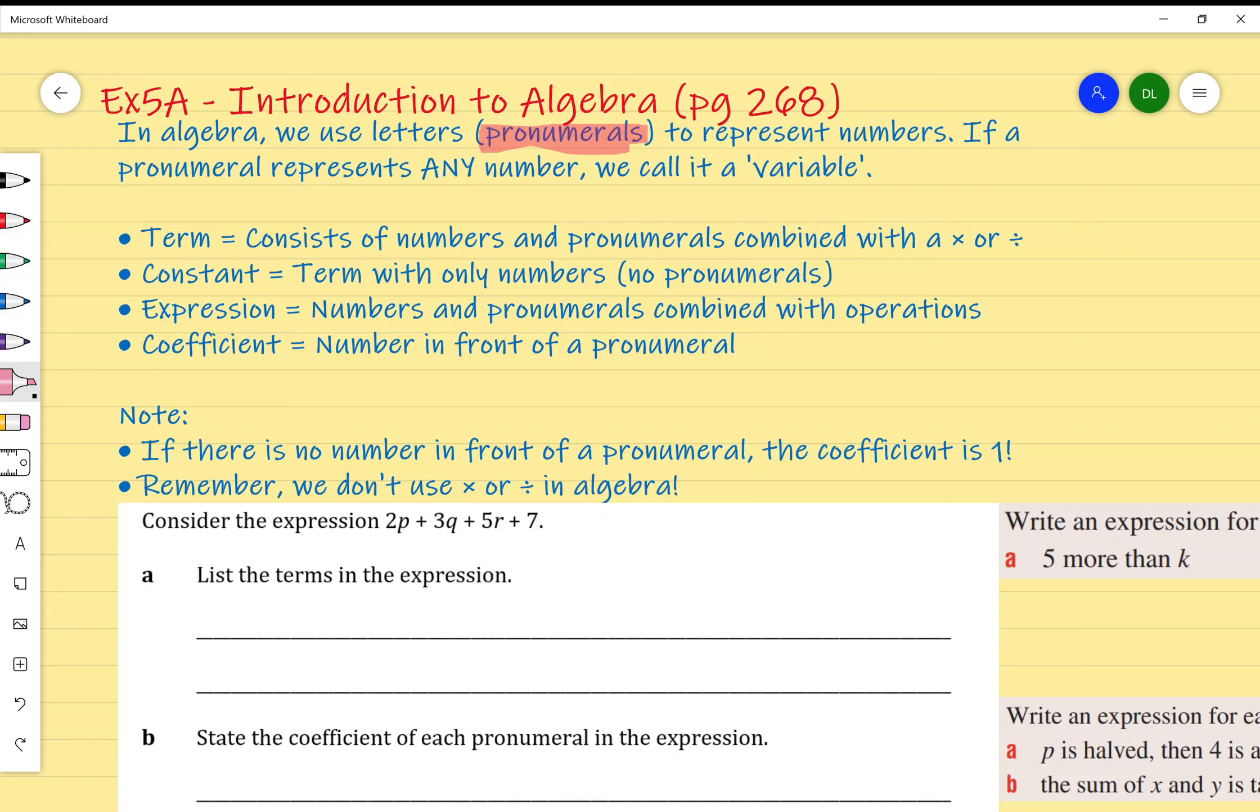In science we've used the term variable before and talked about how a variable is something that can change over time. For example, the temperature throughout the day is a variable because it changes. In maths, it's a number that can change however we want, and that variable is a pronumeral.